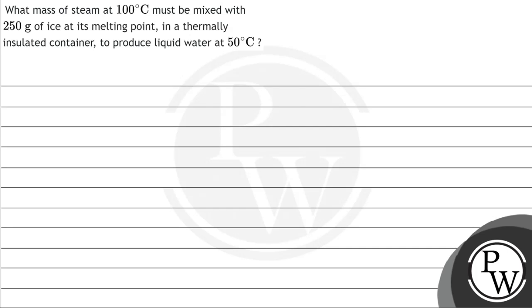Hello, let's read this question. What mass of steam at 100 degrees Celsius must be mixed with 250 grams of ice at its melting point in a thermally insulated container to produce liquid water at 50 degrees Celsius?